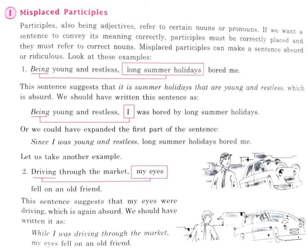Another example: 'Driving through the market, my eyes fell on an old friend' — this suggests my eyes were driving, which is absurd. It should be written as: 'While I was driving through the market, my eyes fell on an old friend.' So the misplaced participle changes the meaning completely and should be corrected.